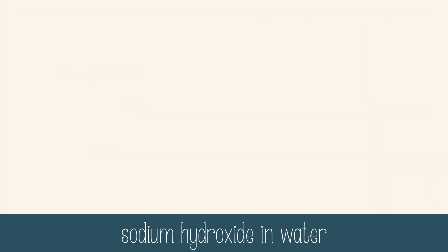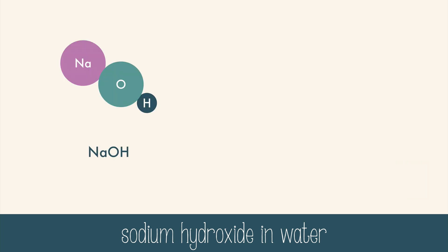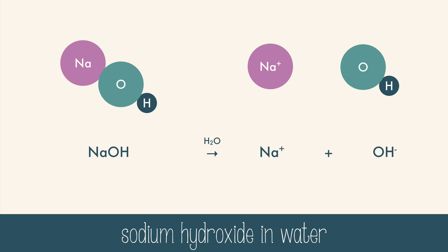Now let's look at a base in water — we'll use sodium hydroxide. Sodium hydroxide is a sodium atom attached to an oxygen and hydrogen, which is the hydroxide ion. And when it breaks apart in water, you'll get a sodium ion and a hydroxide ion. That hydroxide ion is what makes this a base. Because sodium hydroxide was able to produce that, it's an Arrhenius base.